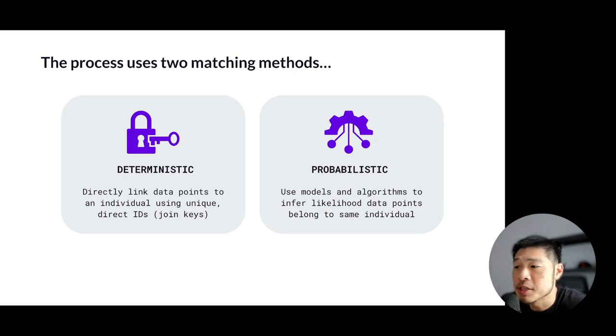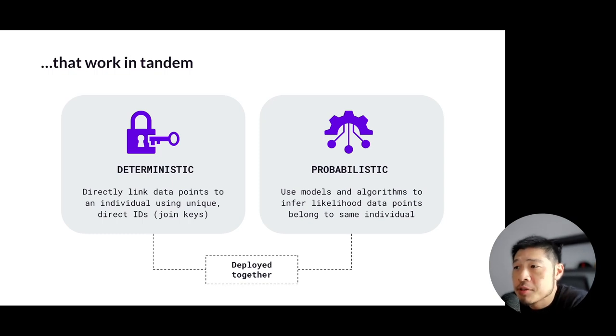As you'd expect, the two methodologies are complementary and work in tandem, providing the following benefits. More comprehensive user profiles, with deterministic matching providing the solid core of linked identifiers, whereas probabilistic matching adds layers of inferred connections that result in extended, more complete user profiles.